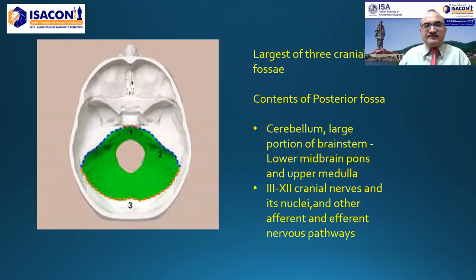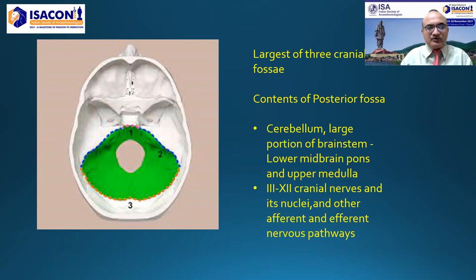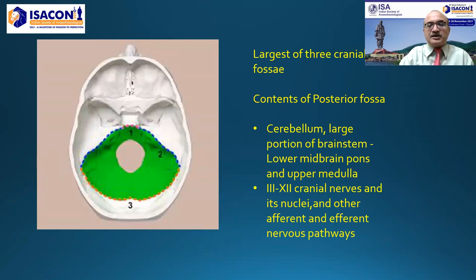According to the skull base divisions, the cranial fossa is divided into anterior, middle and posterior cerebral fossa. The largest of the three cranial fossae is the posterior fossa. Its contents are the cerebellum, large portion of brainstem, lower midbrain, pons and medulla. It also contains cranial nerves 3 to 12, their nuclei, and other important afferent and efferent pathways of the nervous system.